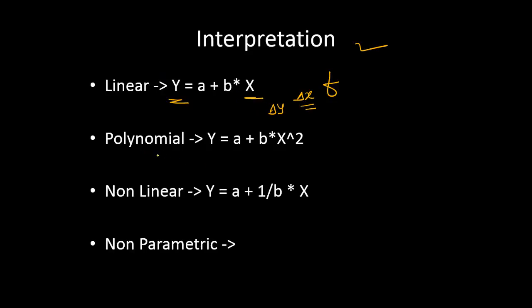Now let's look at another type of model known as a polynomial model, where we have taken a higher degree of the attribute x. This is slightly more difficult to interpret given that we have used a squared term. Finding the relationship between y and x with a square term is harder. For example, set x = 1, find y, then change to x = 2, find another value of y, take the difference — that works for the linear case.